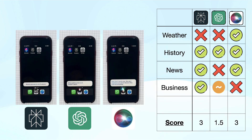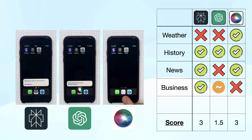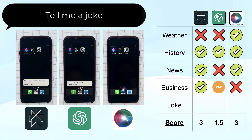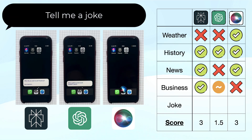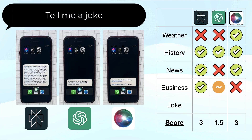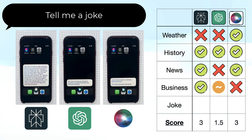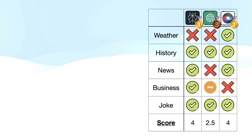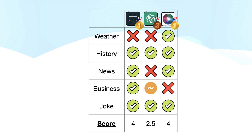Lastly, let's see which of the three can tell us a good joke: Tell me a joke. I actually think these jokes can be quite funny sometimes, although I'm not sure it's totally necessary to provide a whole list, as Perplexity did in this case. As you see, Perplexity and Siri both get 4 points and win against ChatGPT.